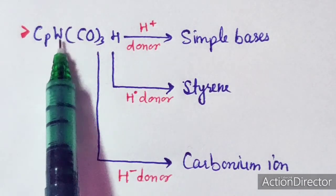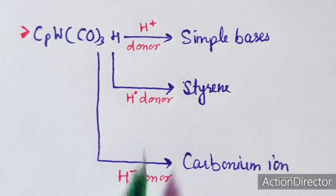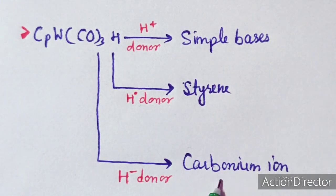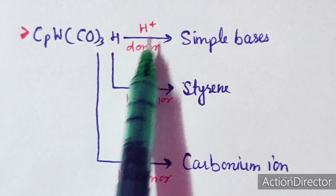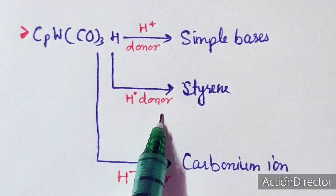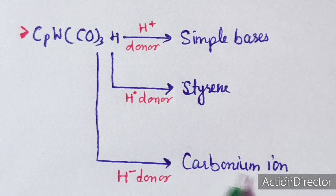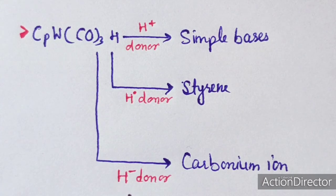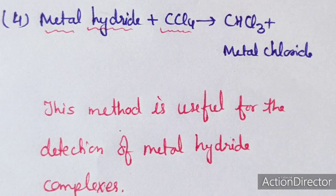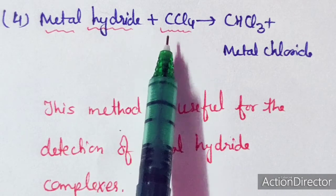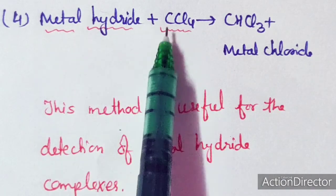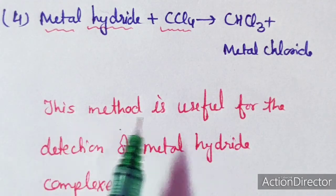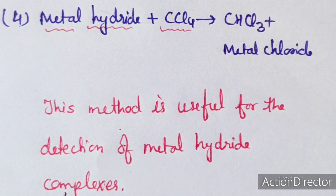The fourth reaction of metal hydrides is with halides of Group 14 elements (chlorides), forming metal chloride and chloroform. This reaction is a very useful method for the detection of metal hydride complexes.